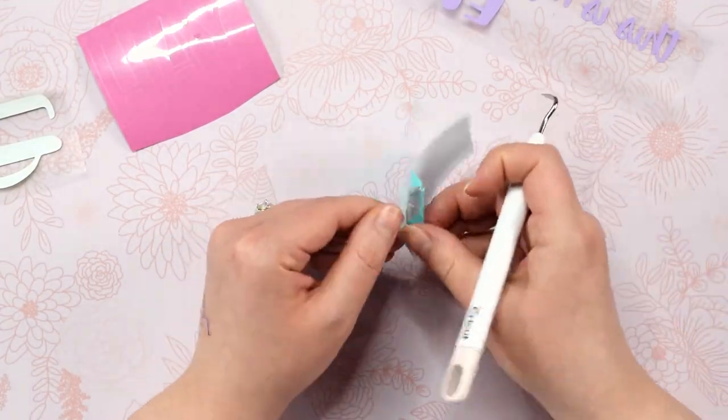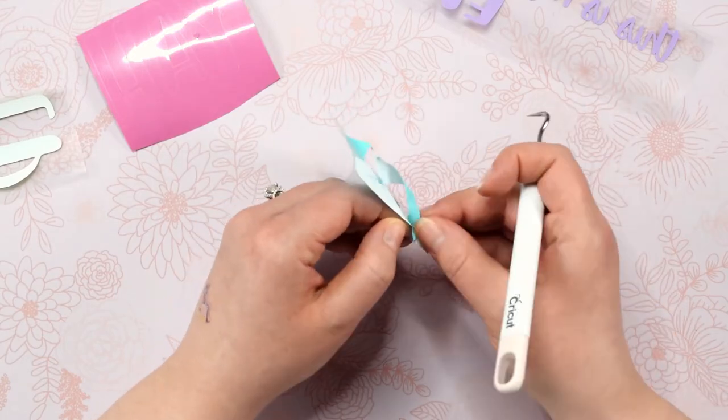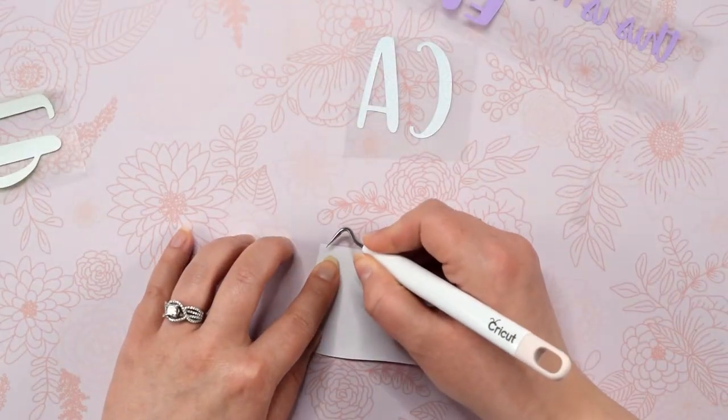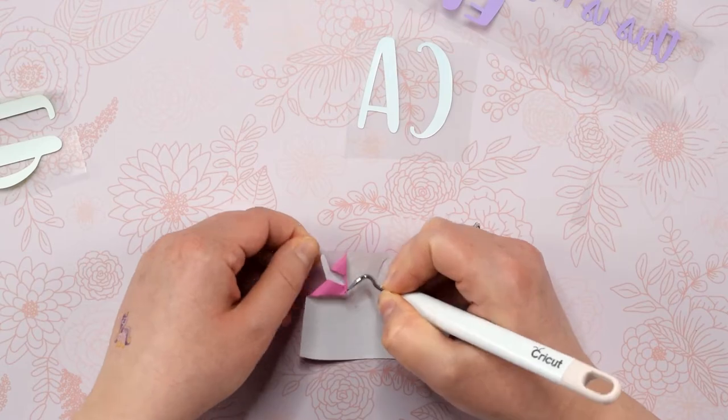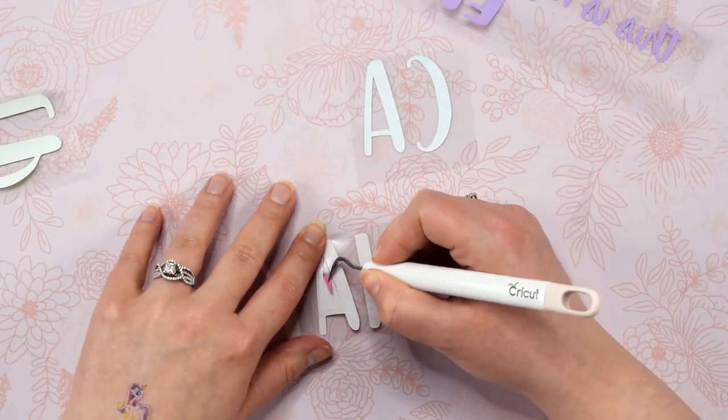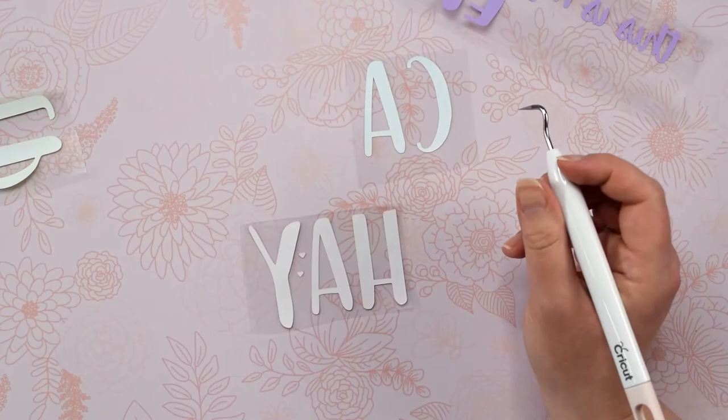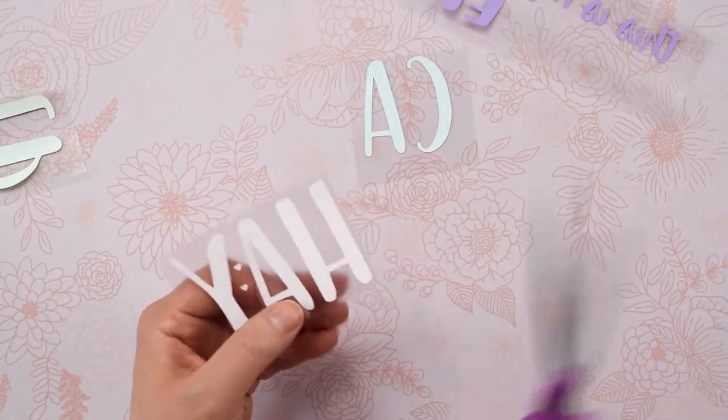For this project, since we use different colors for each of the letters, we are going to manually place all of the letters on the canvas. To do that, we need to cut the excess plastic backing off so we can place our letters close together on the canvas.